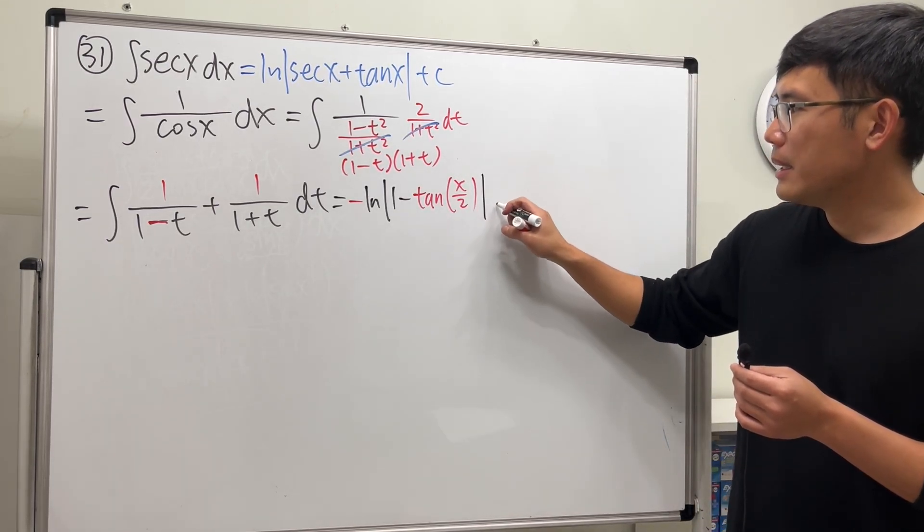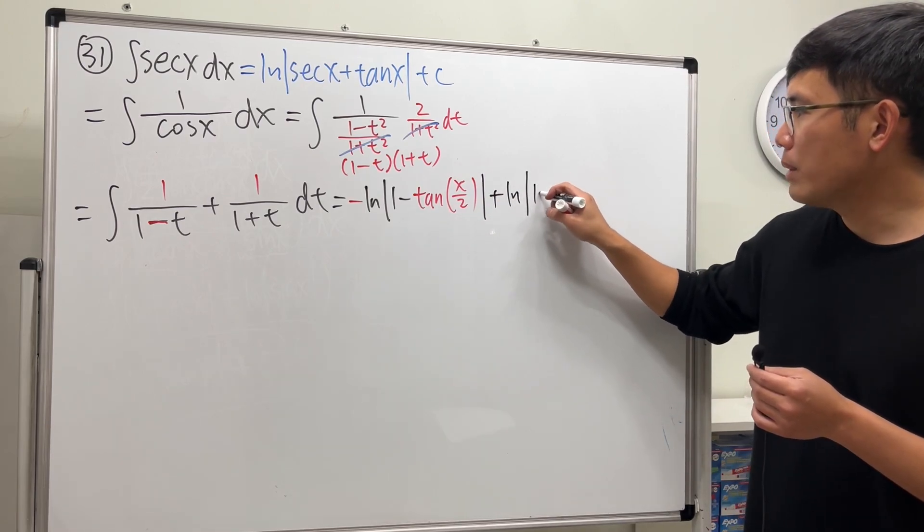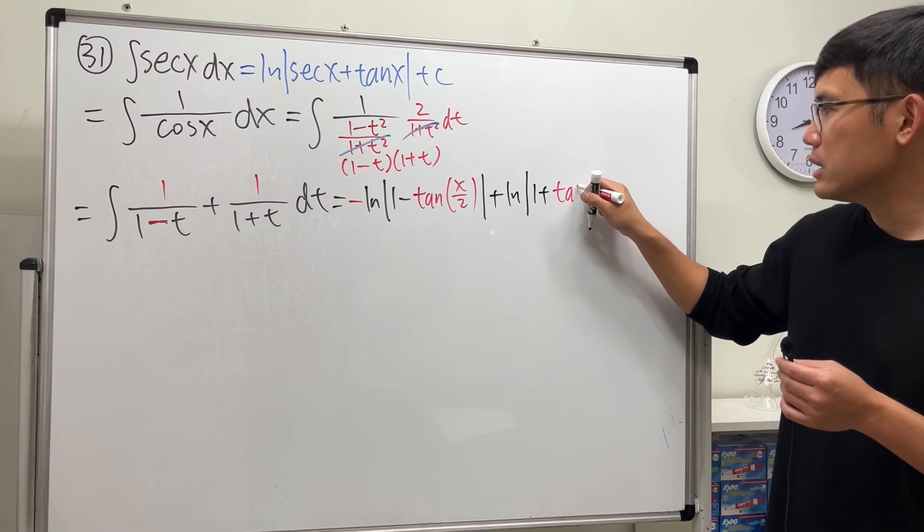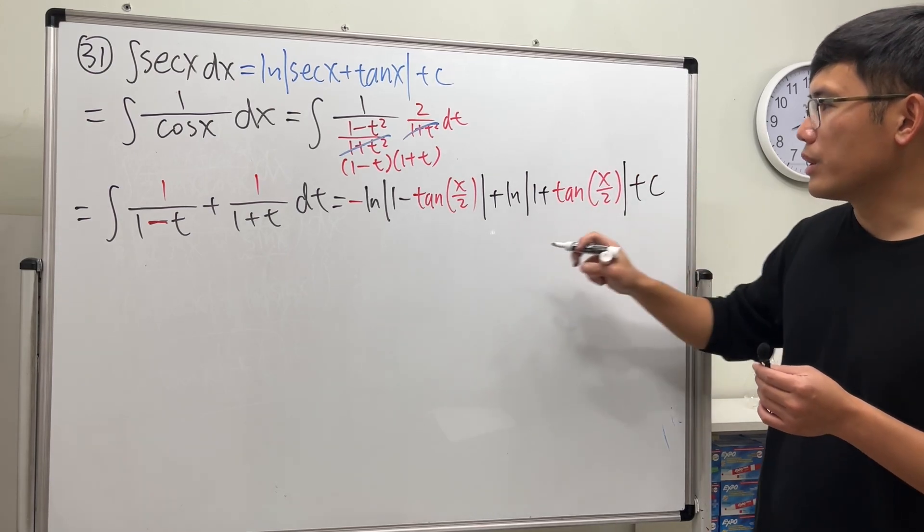All right, and then plus the other one is ln absolute value of 1 plus tangent x over 2. And then, we're done.